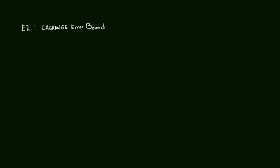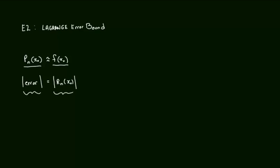Let's take a look at the second type of error. This second type is called Lagrange error bound, but for convenience I'm going to call it E2 so we can refer to it more easily. Like with E1, we're approximating the error if we use a polynomial of order n at x0 to approximate f of x0. This notation here — the error equals the remainder at x0. Now, this is what makes this one very special.